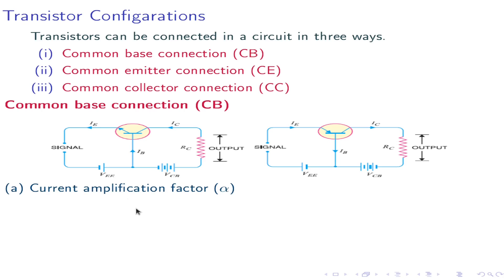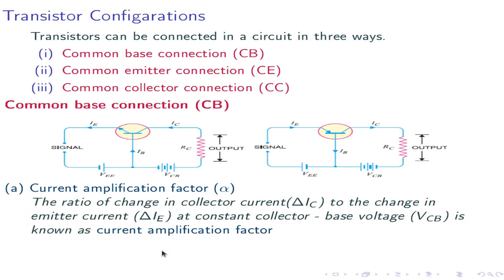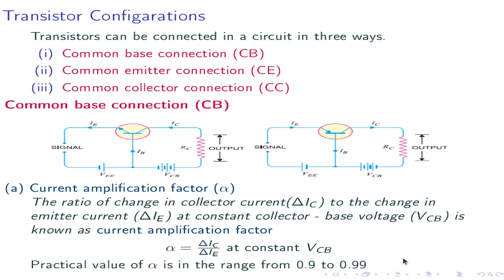Current amplification factor is the ratio of output current to the input current at constant output voltage. Here it is the ratio of the change in collector current delta Ic to the change in emitter current delta Ie at constant collector-base voltage Vcb. Alpha equals delta Ic divided by delta Ie at constant Vcb. Its value is in the range of 0.9 to 0.99.